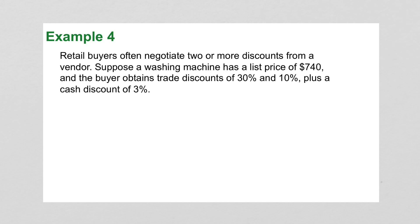Example 4 says, retail buyers often negotiate two or more discounts from a vendor. Suppose a washing machine has a list price of $740, and the buyer obtains trade discounts of 30% and 10%, plus a cash discount of 3%. So we want to find the new cost of this washing machine. Originally, you've got your new price over the original of $740.